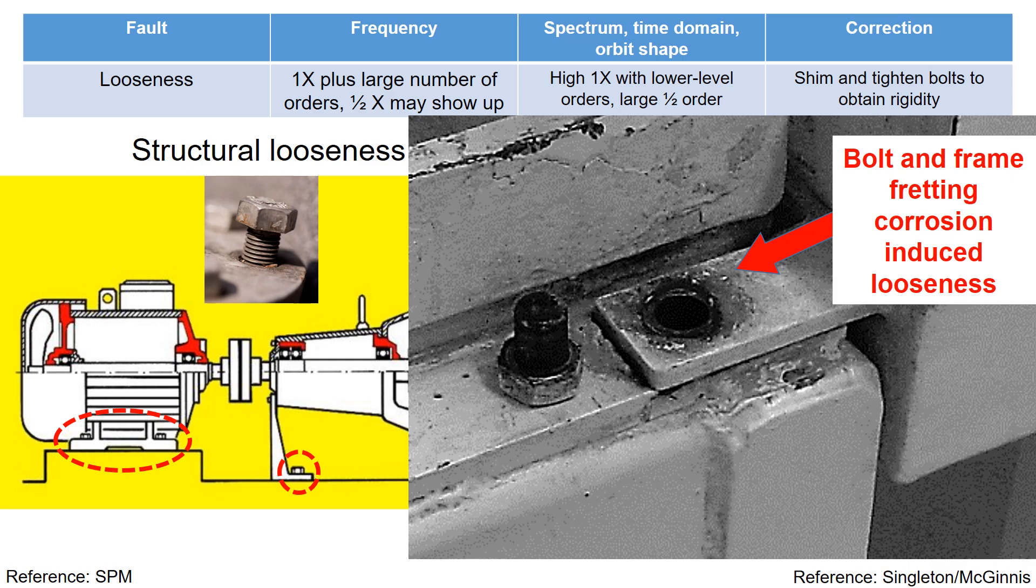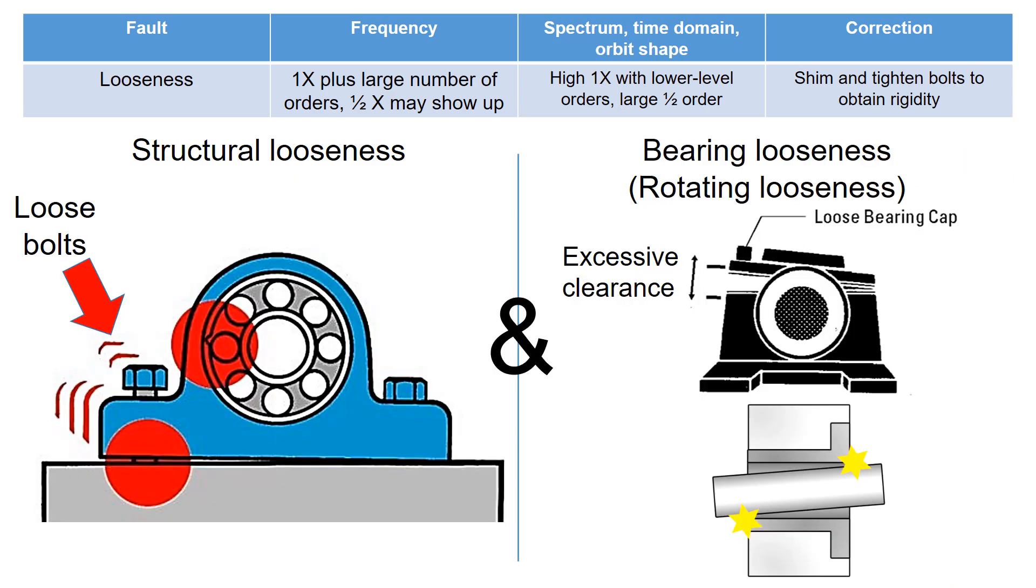Also, bolt and frame threading, along with corrosion-induced issues, can contribute to structural looseness. Let's return to this figure. Now, let's delve into bearing looseness or rotating looseness.